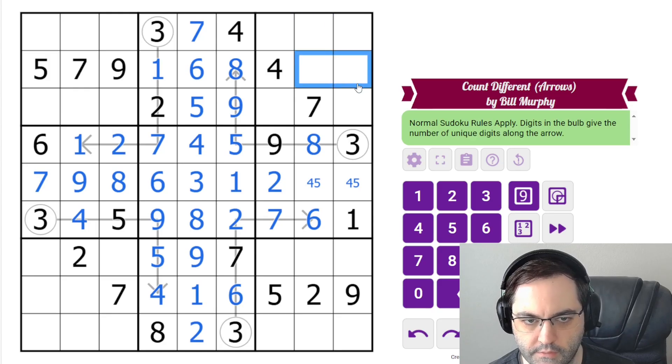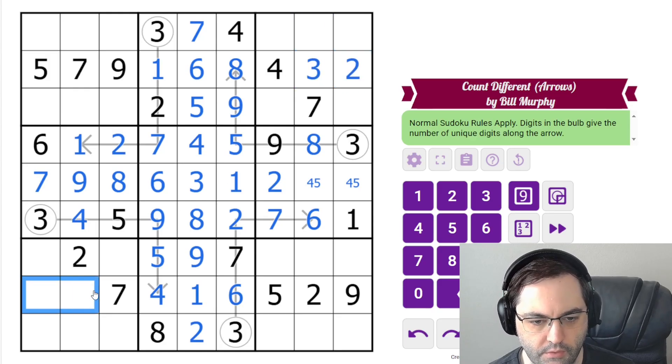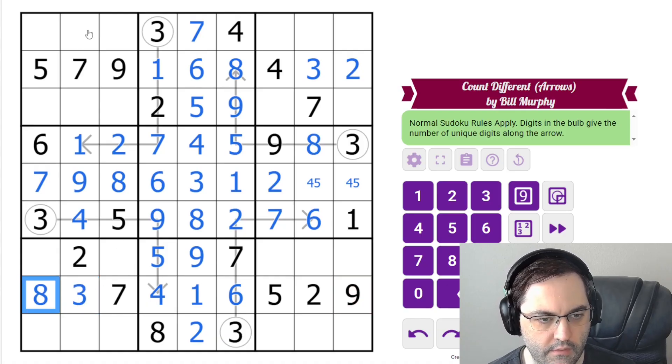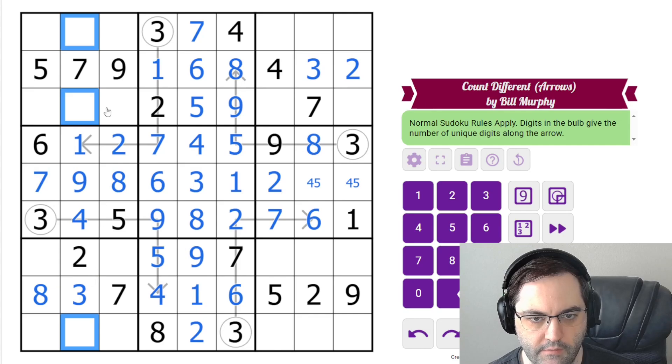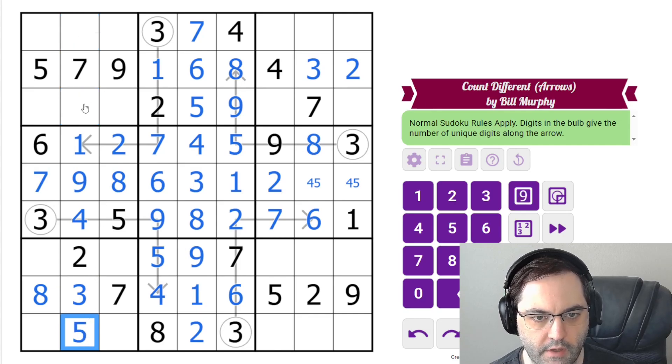So all of those resolved except for this pair over here. Let's look at this row. We need two and three. This row we need three and eight. This column needs five, six, and eight. These two can't be five. So this must be the five.